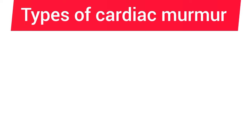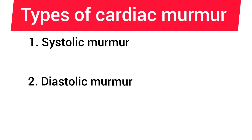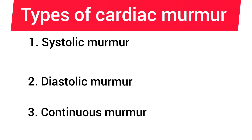Cardiac murmur is classified into three types: number one is systolic murmur, number two is diastolic murmur, and number three is continuous murmur.